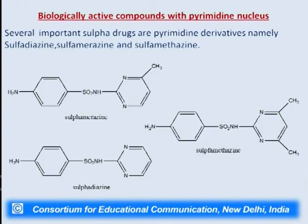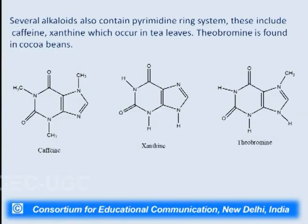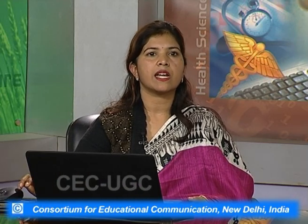Biologically active compounds containing the pyrimidine nucleus include sulfa drugs such as sulfadiazine, sulfapyrimidine, and sulfamethazine. Several alkaloids also contain pyrimidine — caffeine, xanthine, and theobromine are purine derivatives which also contain the pyrimidine nucleus. Folic acid contains the pteridine ring system, which further contains pyrimidine. So pyrimidine and purine ring structures are present in many natural forms. This was all about pyrimidine properties and its derivatives.